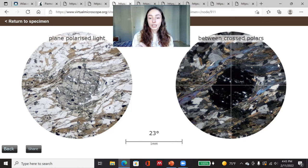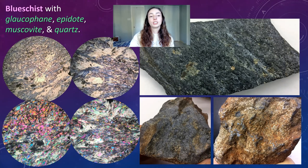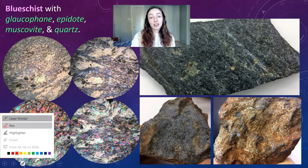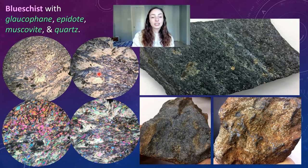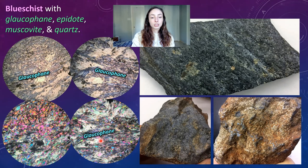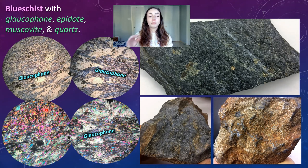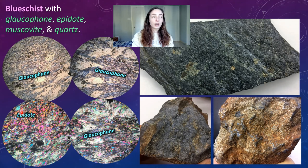Now on to blueschist. Blueschist can be blue in color because of typically blue minerals like glaucophane. Glaucophane is a notably blue mineral in hand sample that can turn a schist blue in tint. It is also blue under plane polarized light, as we can see in these thin section images — both of these platy blue minerals here are glaucophane. We can also see it in the cross-polarized image, where it has brighter interference colors but remains largely blue. The brighter, more blocky rather than platy habit colors are likely epidote crystals.